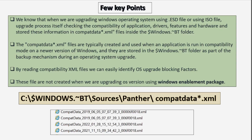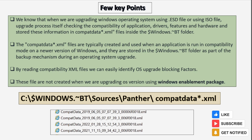First let's talk about some of the key points. When we are upgrading the Windows operating system using an .esd file or using an ISO file, the upgrade process itself checks the compatibility of applications, drivers, features, and hardware, and stores this information in a compatdata.xml file inside the $Windows.~BT folder.